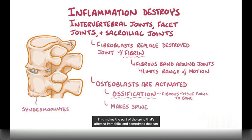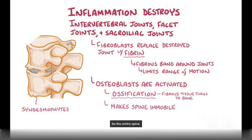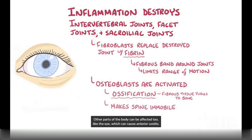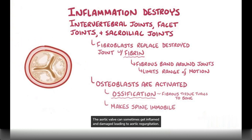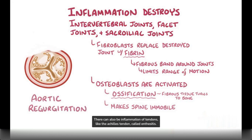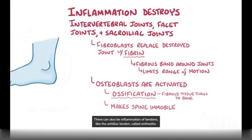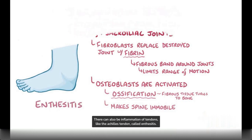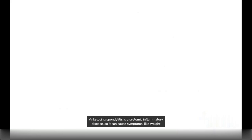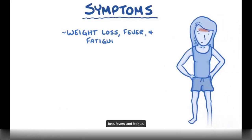This makes the part of the spine that's affected immobile, and sometimes that can be the entire spine. Other parts of the body can be affected too, like the eye, which can cause anterior uveitis. The aortic valve can also sometimes get inflamed and damaged, leading to aortic regurgitation. There can also be inflammation of tendons, like the Achilles tendon, called enthesitis. Ankylosing spondylitis is a systemic inflammatory disease, so it can cause symptoms like weight loss, fevers, and fatigue.